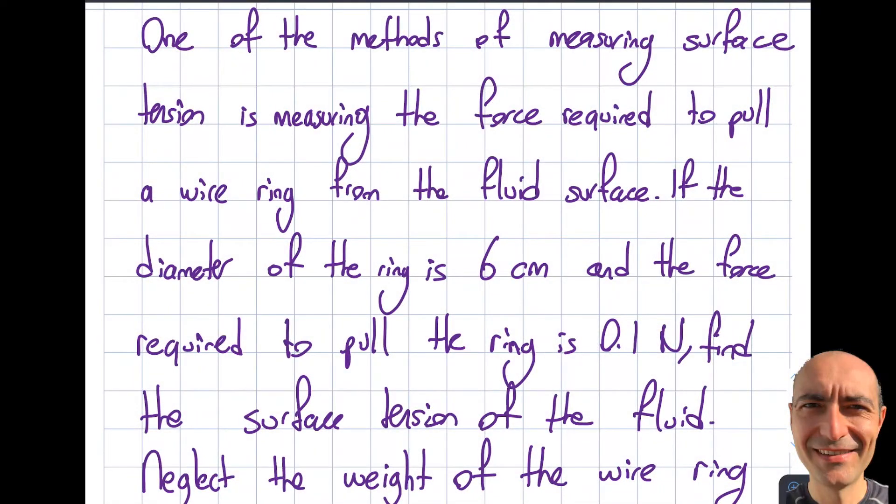Let's solve a surface tension question for the FE exam. Here is a method of measuring surface tension. We can measure surface tension by looking at the force required to pull a wire shaped ring from the fluid surface. If you think about it, it's going to cling to the surface. Once you pull it and pull it, it will just pop right out.